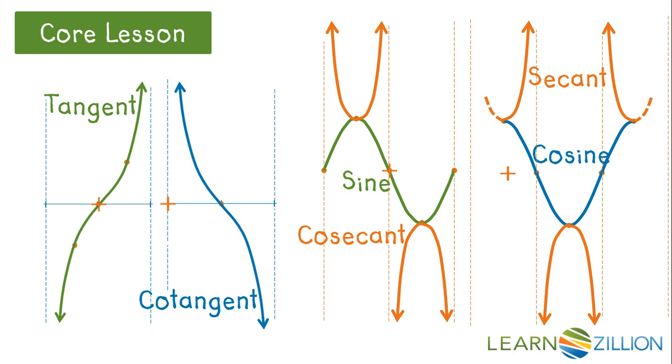Tangent and cotangent will have a period of π over B. The other four, 2π over B. We'll do a couple of examples. But first, let's talk about why do we need all of these models.